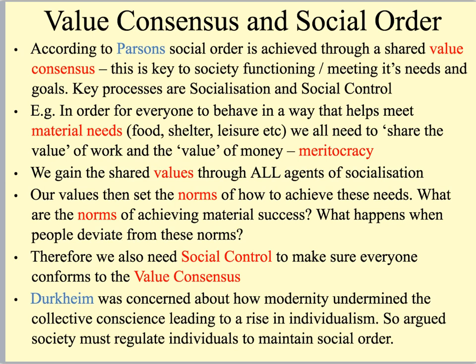I want to go into a bit more depth about Parsons' analysis of the value consensus and how we achieve social order through it. He said it was key to society functioning and meeting its needs or goals, and he argued the key processes for the value consensus to be maintained — and therefore social order — would be two processes you're very familiar with: socialisation and social control. You could do the same analysis using the example of families, security, or material needs.